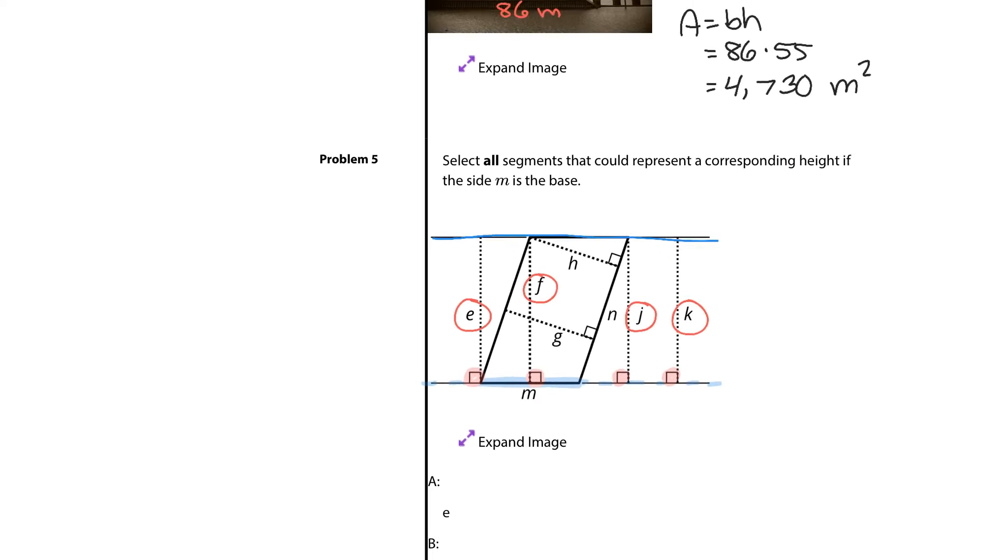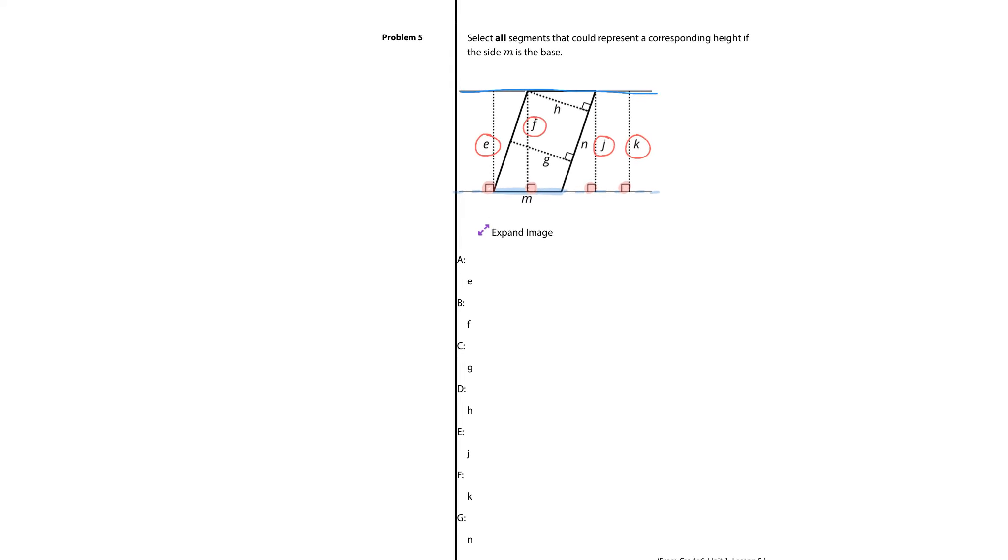And so my solution here will be A because of E, B because of F, E because of J, and F because of K. A, B, E, and F. And once again, you're looking for that right angle connecting the two bases. The height and the base of parallelograms always meet perpendicularly at the right angle.